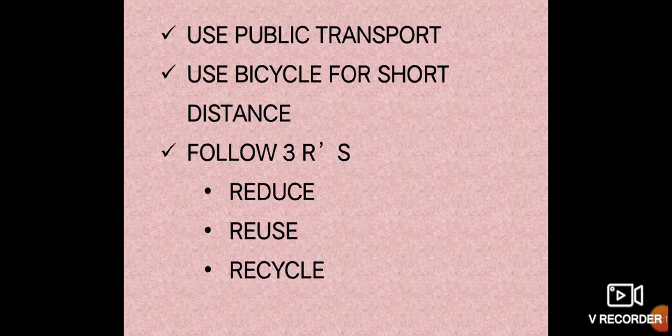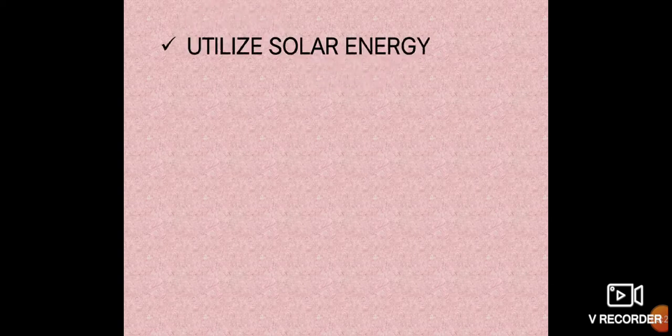The next thing is to utilize solar energy. What is meant by solar energy? The energy from the sun — the light and heat we receive — is called solar energy. It is abundant on the earth. If you start using solar energy, you can reduce the usage of electricity and fuels. Whenever possible, use solar energy. In houses we can fix solar panels to get electricity.